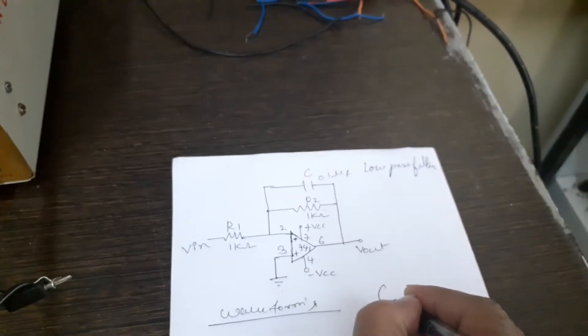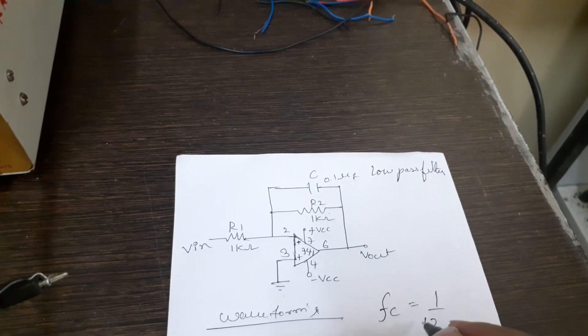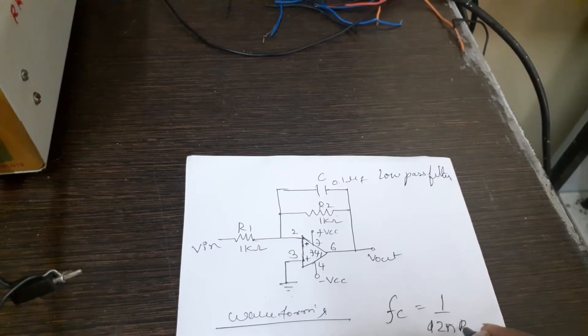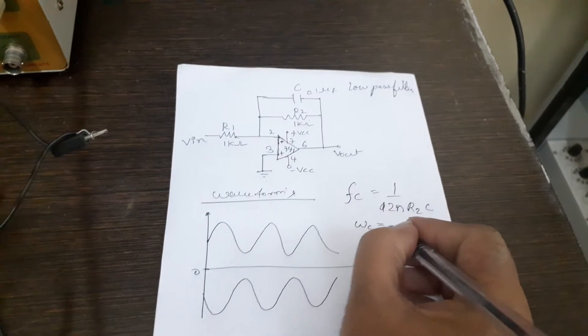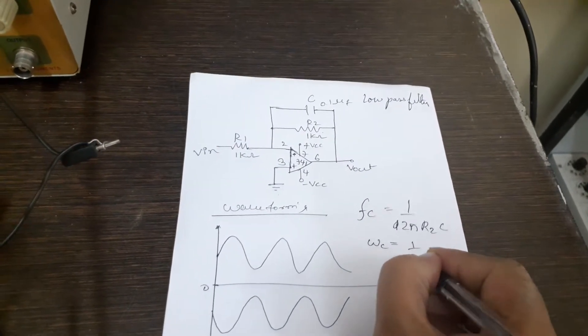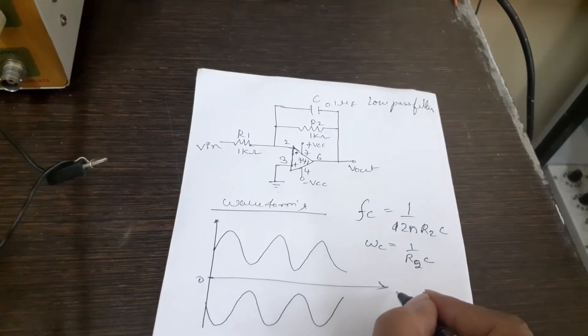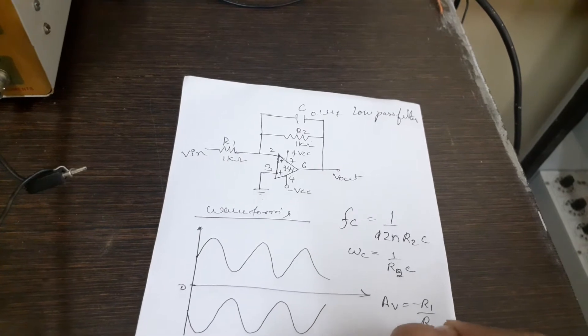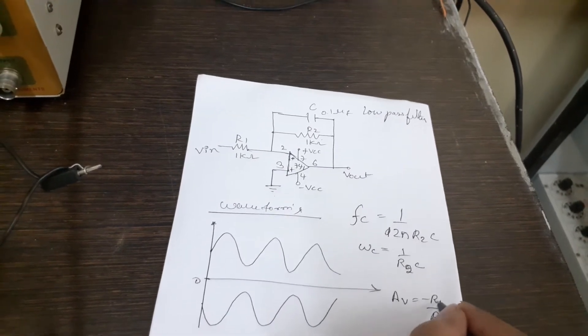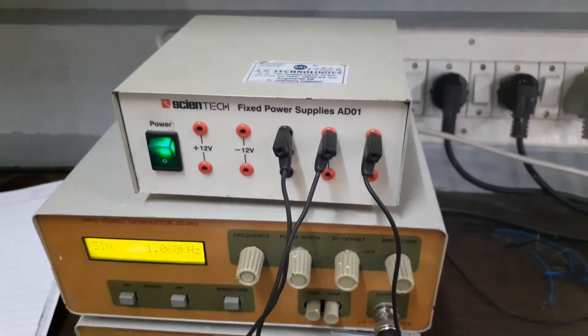Now the cutoff frequency for this will be 1 over 2 pi R2 C. So you can see in radians the cutoff frequency will be 1 over R2 C. Then the gain AV will be R2 over R1. Now we need a CRO for seeing the waveform.